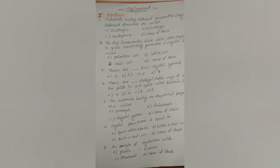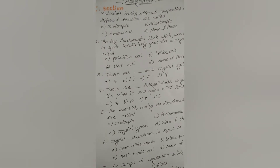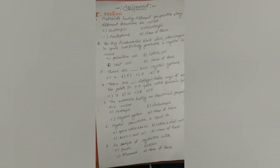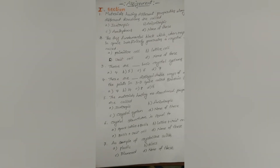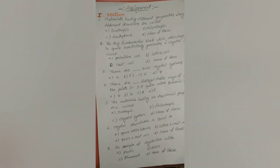Here is a small assignment from this topic. First one: materials having different properties along different directions are called either isotropic, anisotropic, or amorphous solids. Next one: a tiny fundamental block which when repeated in space indefinitely generates a crystal structure is called either primitive cell, lattice cell, or unit cell. Next one: there are how many types of basic crystal systems — either four, five, six, or seven.